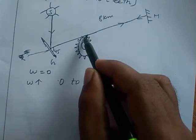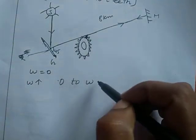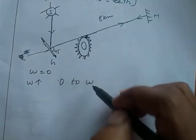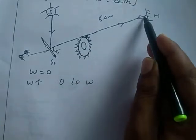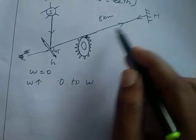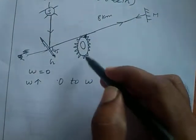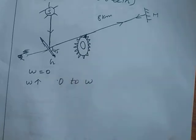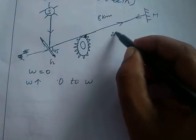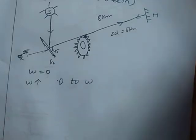At that instant, the light from the mirror will pass through the same cut. Then I increase the angular velocity omega from zero. At a particular value of omega, the reflected light from the mirror is blocked by the adjacent tooth of that slot. We know the light has to travel a distance 2d — that is 8 km — in a time t.